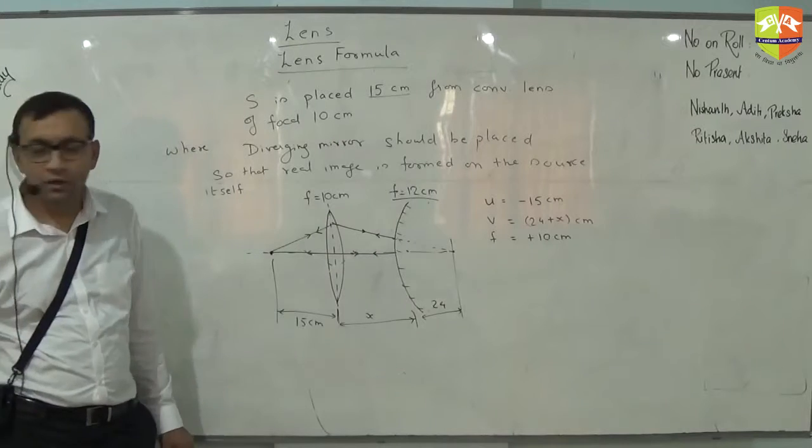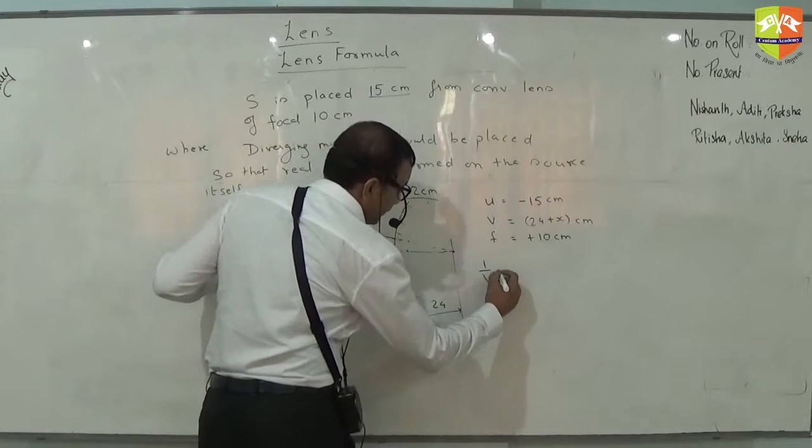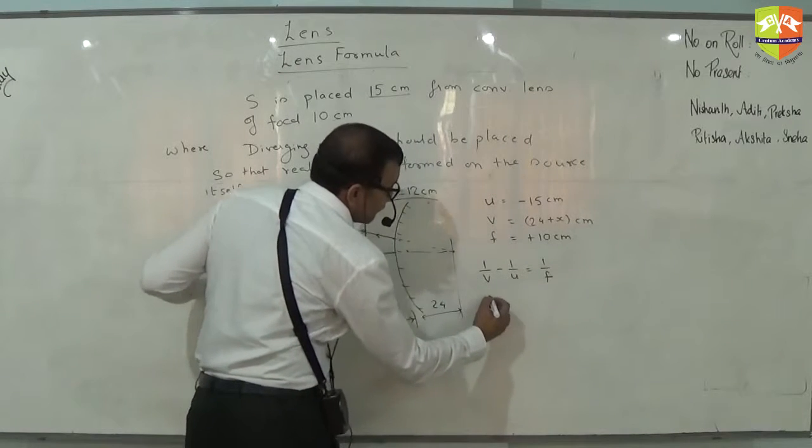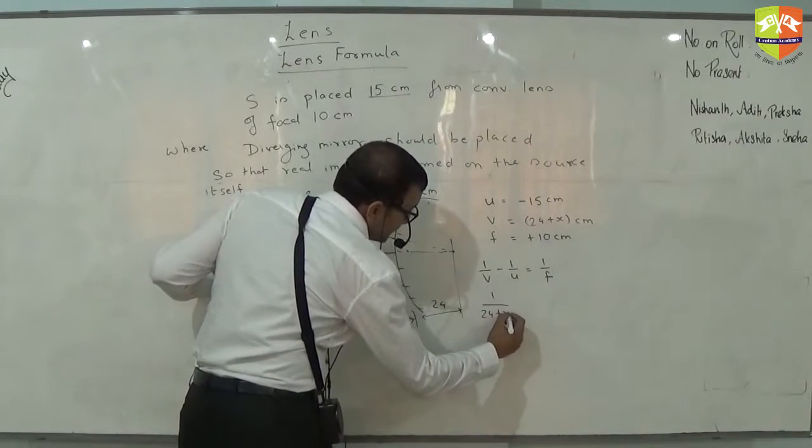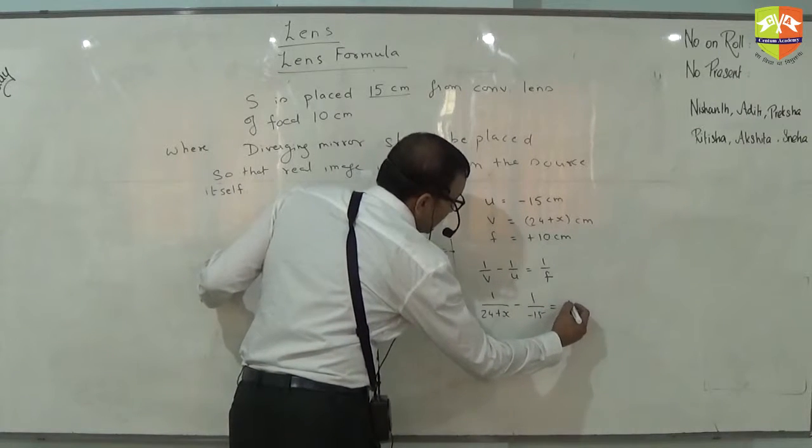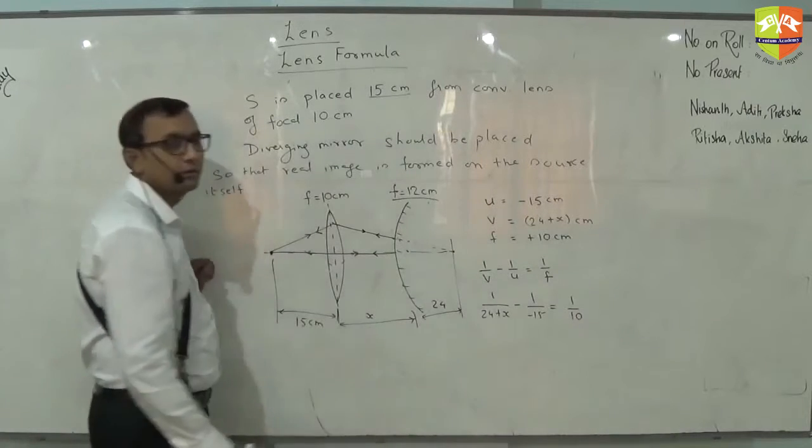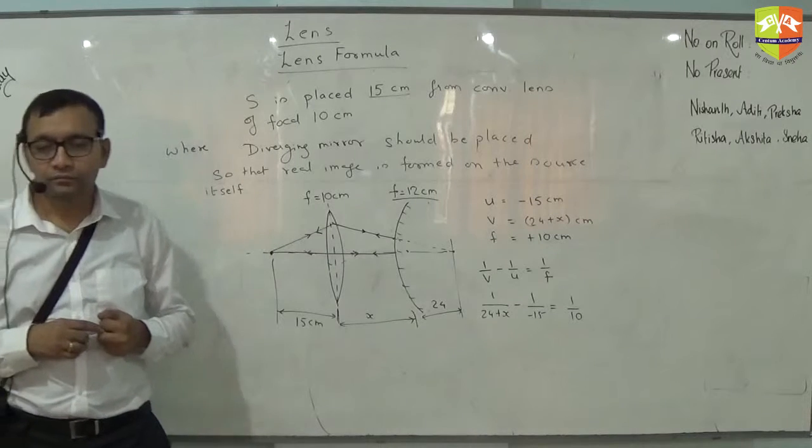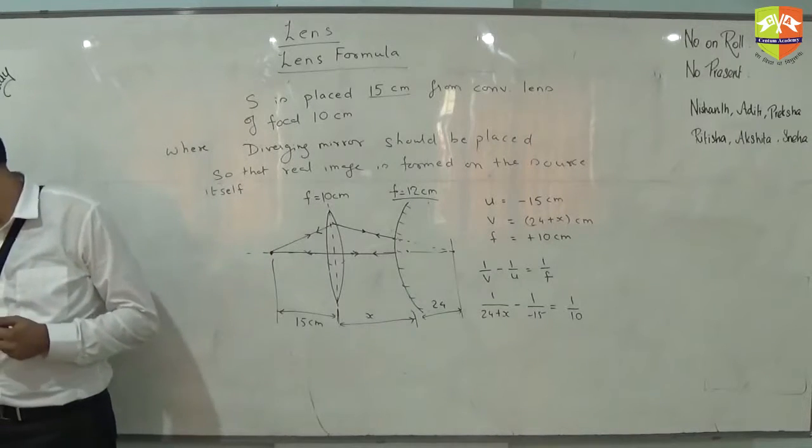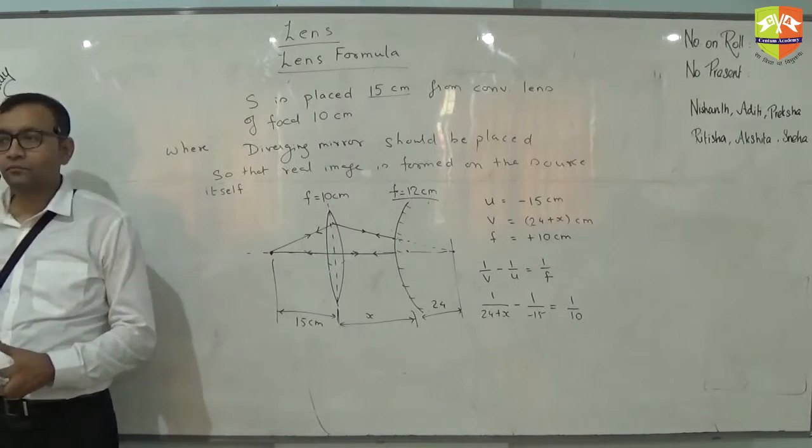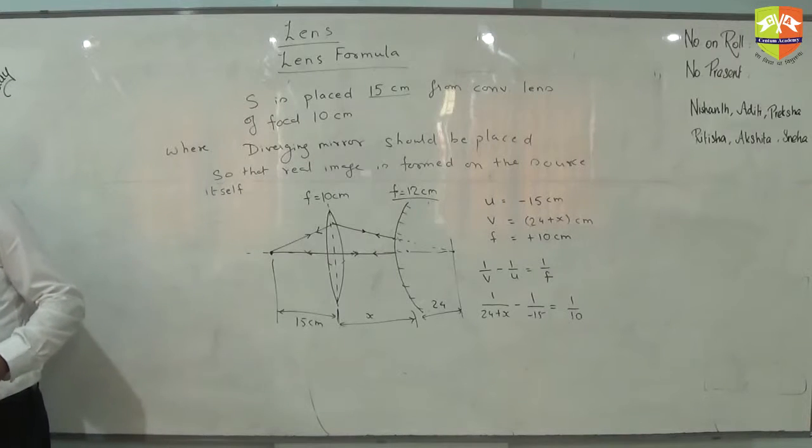I will use the lens formula: 1 by v minus 1 by u equals 1 by f. So 1 by 24 plus x minus 1 by minus 15 equals 1 by 10. We are getting x plus 5... 6.